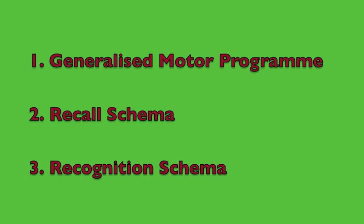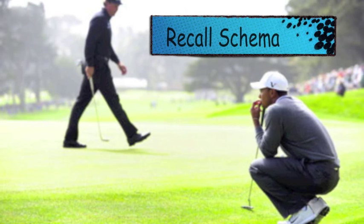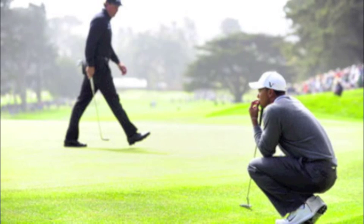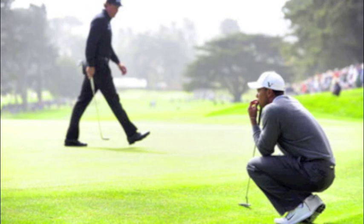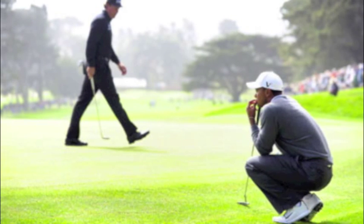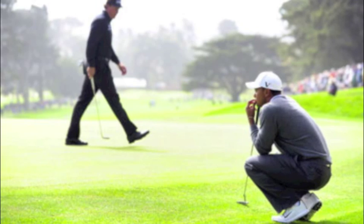In schema theory, there are three things required to perform a skill: a generalized motor program, a recall schema, and a recognition schema. Before the generalized motor program is executed, the performer engages their recall schema before deciding on the movement response. The more experienced the performer is, the larger their recall schema, which will in turn mean better adjustments into the generalized motor program.